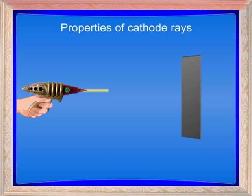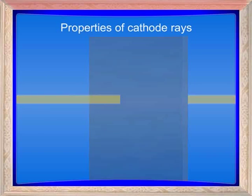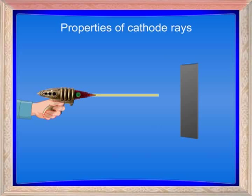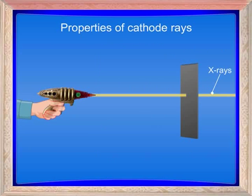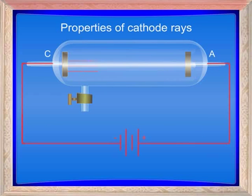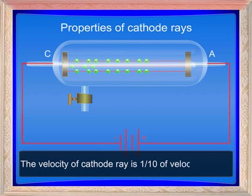Six, cathode rays penetrate through thin metal foils. Seven, when the rays strike a heavy solid metal, X-rays are produced. Eight, cathode rays are made up of fast-moving electrons; the velocity of cathode rays is one-tenth of the velocity of light.